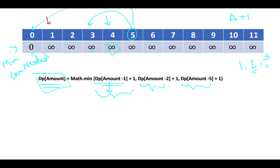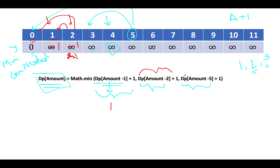Let's iterate from i equals 1 up to 11. For i=1: going one step back to position 0 gives 0 plus 1 equals 1. Going back 2 steps gives minus 1 — negative, skip. Going back 5 steps gives minus 4 — skip. Answer: dp[1] = 1. For i=2: one step back gives 1 plus 1 equals 2. Two steps back gives 0 plus 1 equals 1. Minimum of 2 and 1 is 1. So dp[2] = 1.